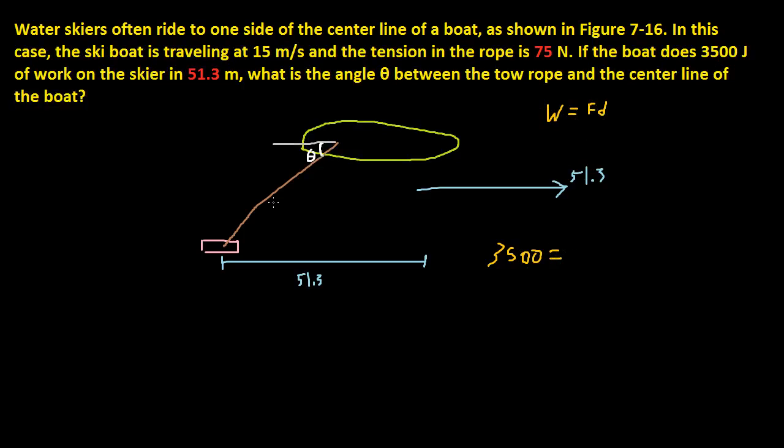well we don't know the horizontal, we know this force, because this is tension, and that's equal to 75 newtons. But we don't know the horizontal force yet, because 51.3 meters is horizontal, so we don't know the force yet. So we're going to designate force as F, and then multiply by 51.3.